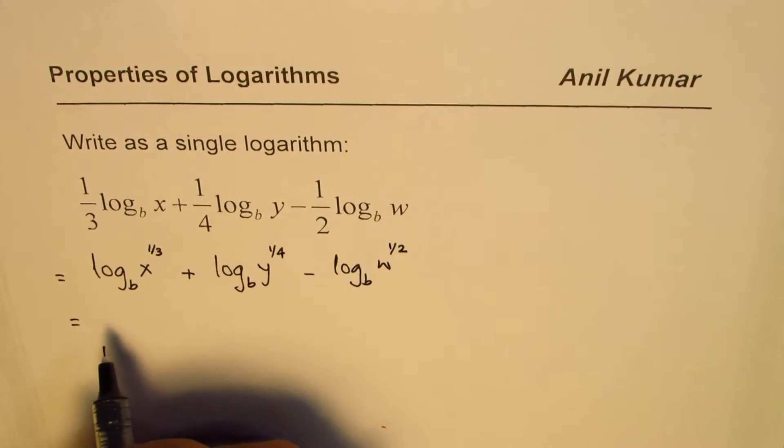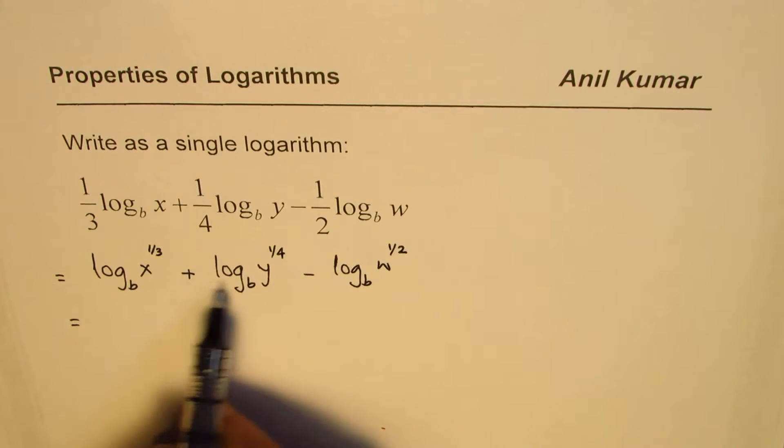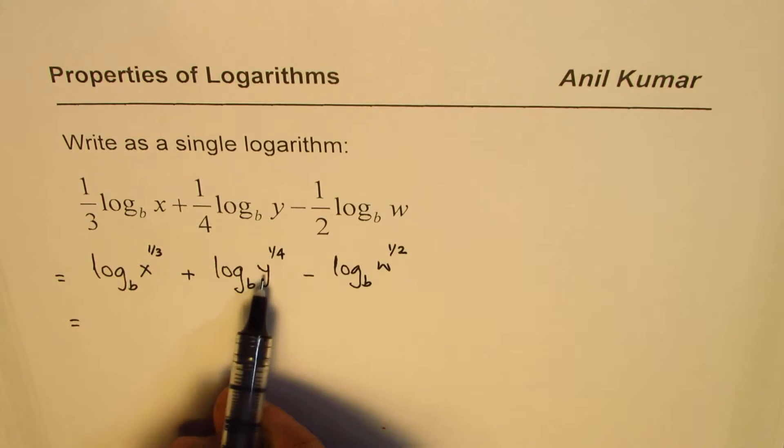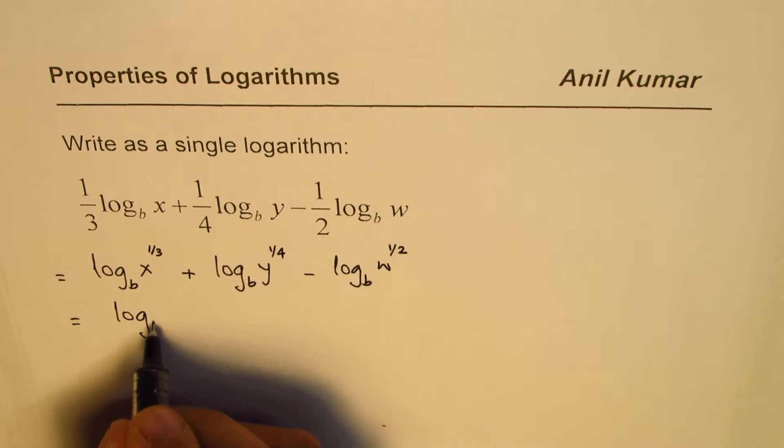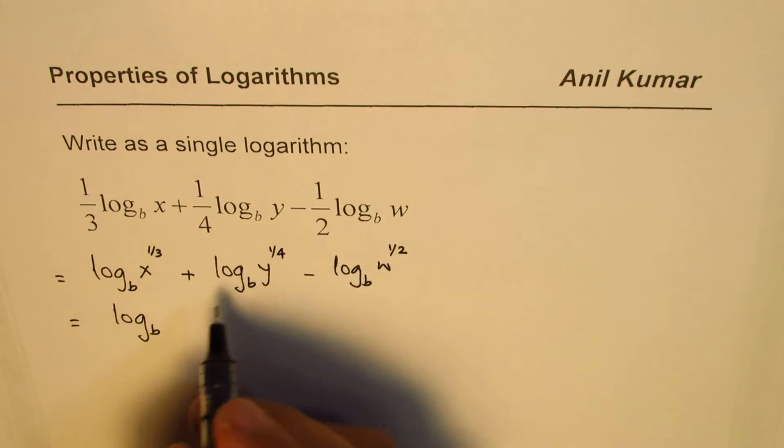Now we can apply the property that when you are adding logarithms with the same base, you could write them as a product. So we could write this as log base b of the product of these two: x to the power of 1/3 times y to the power of 1/4...